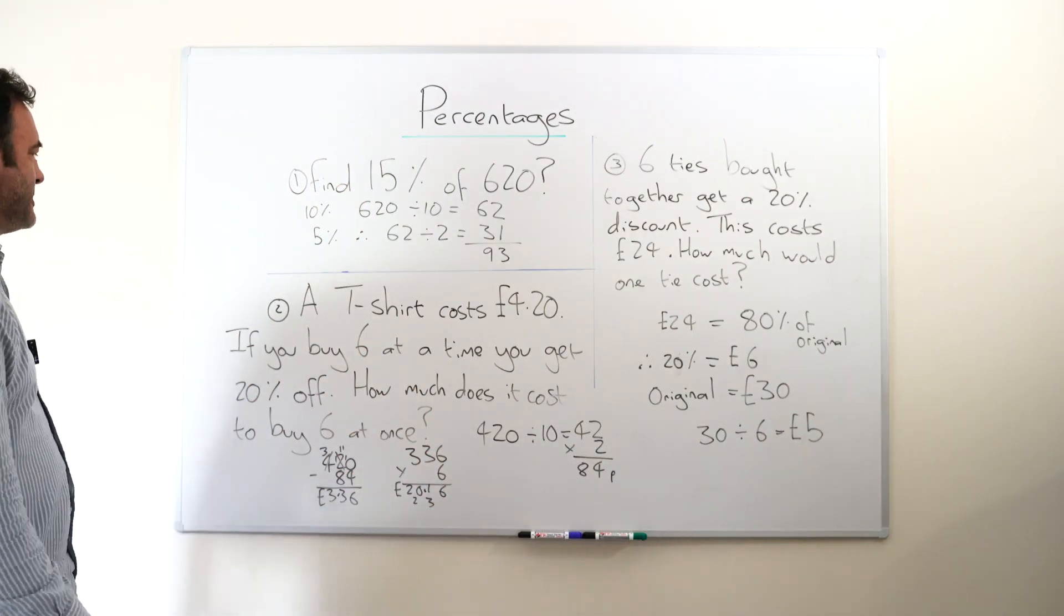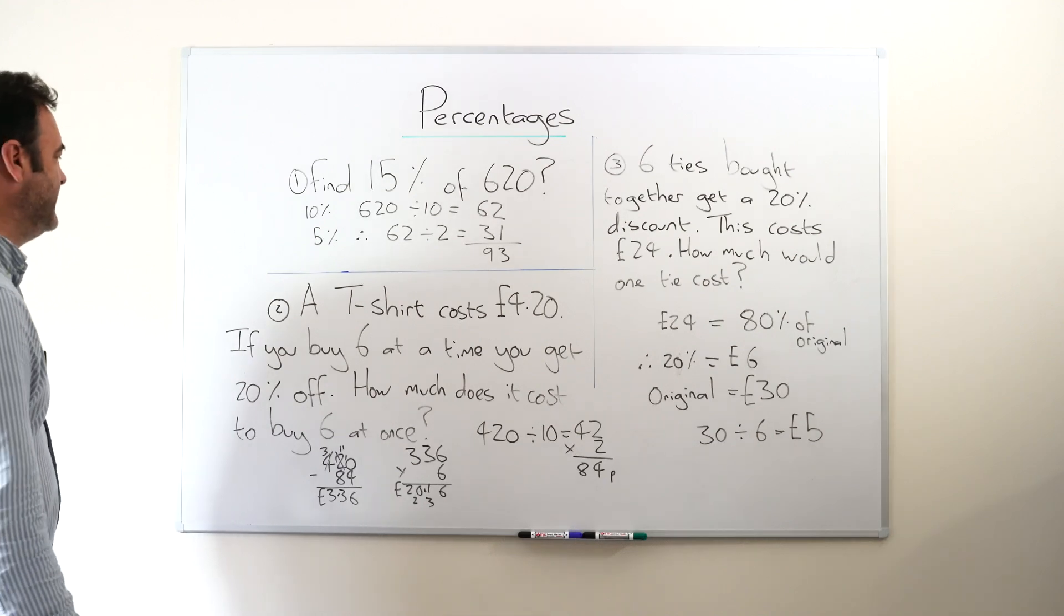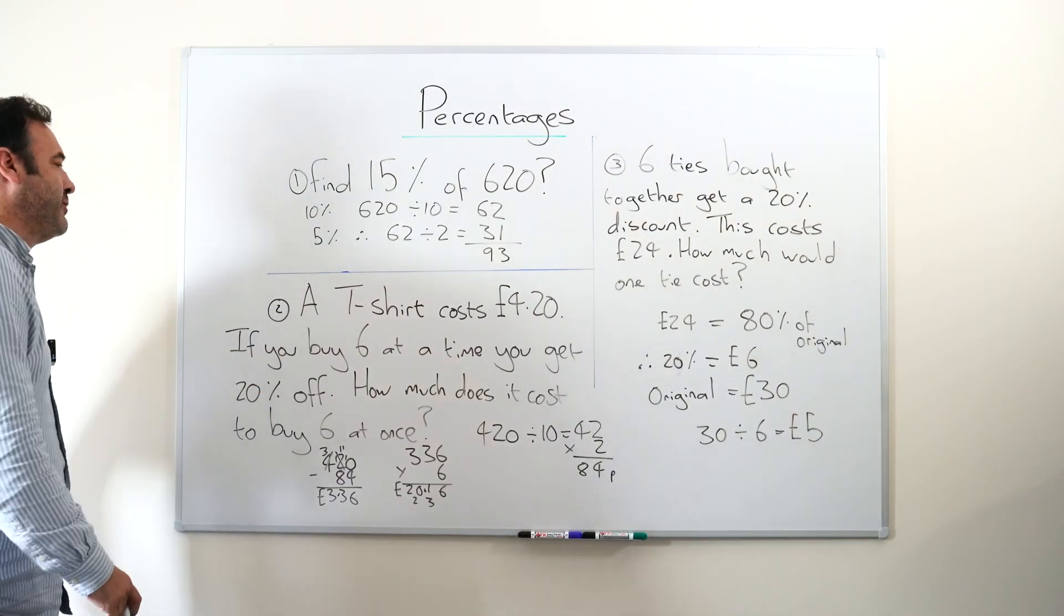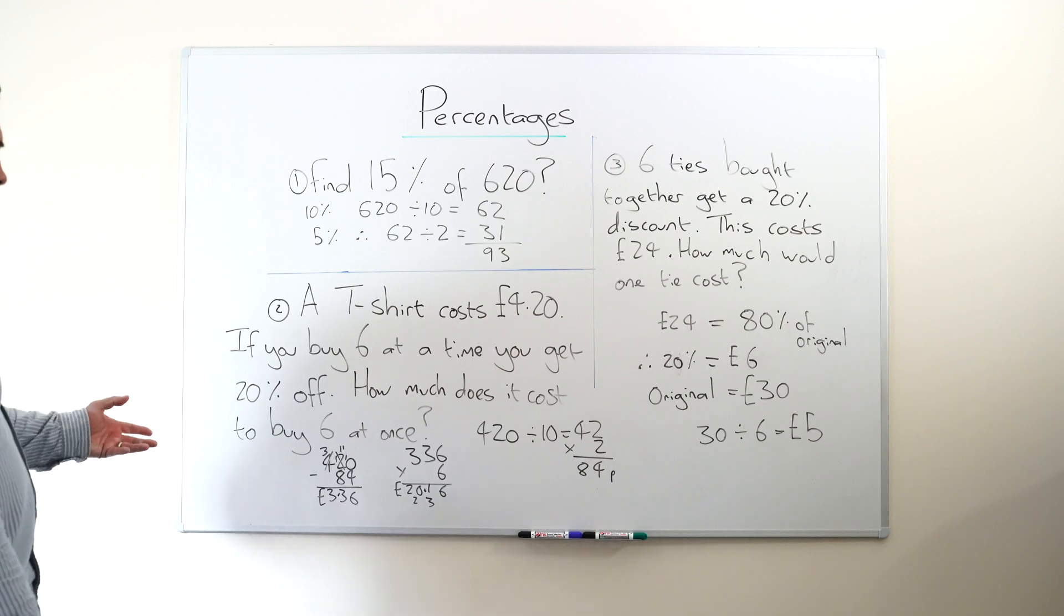Next thing, we've got a wordy question so we're getting a bit more into an 11 Plus style question here. A t-shirt costs £4.20, if you buy six at a time you get 20% off. How much does it cost to buy the six all at the same time to get our 20% discount?